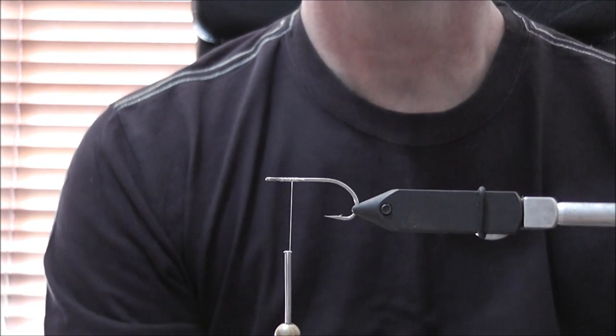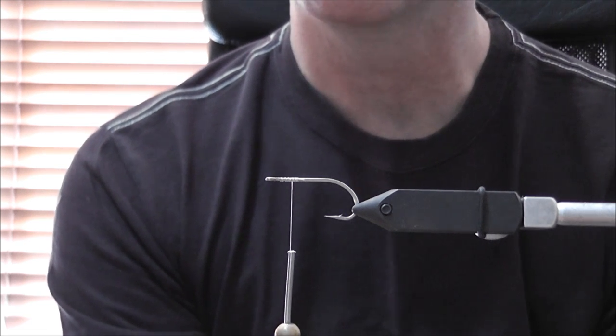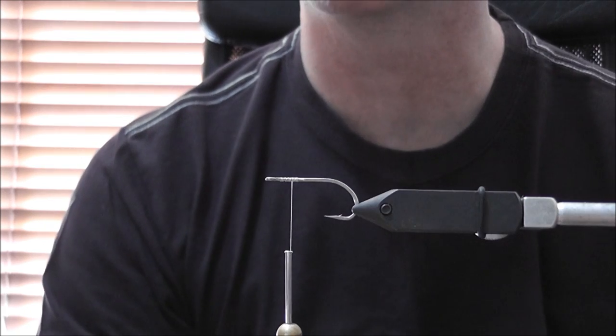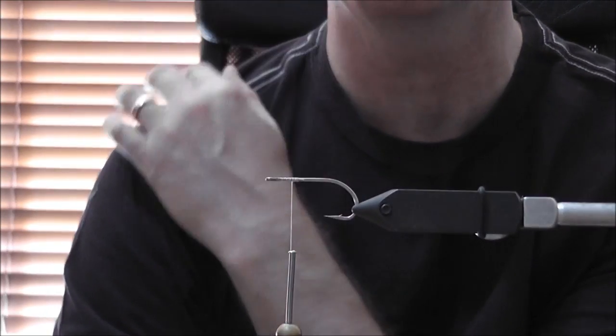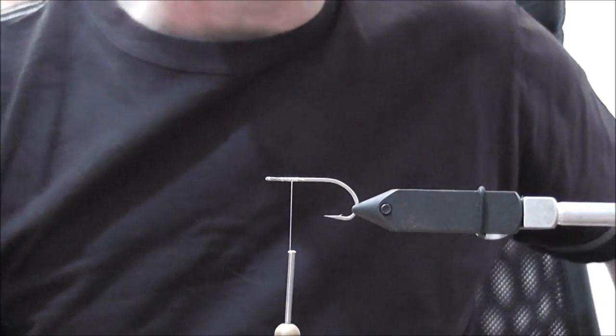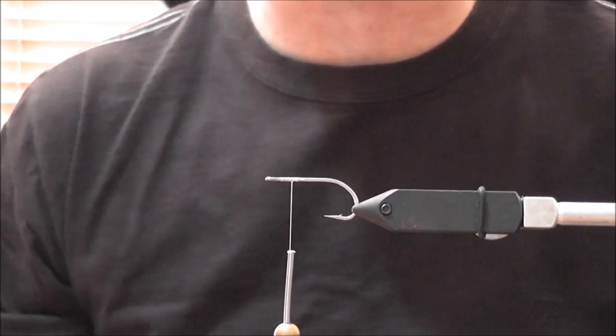Hi everyone, today I'm going to tie the DNA clouser that I use primarily for flathead, but I've caught quite a few species on it, from brim, I've caught salmon, trevelli, a lot of fish that will take bait fish will take this. I've even caught a dew fish on it.